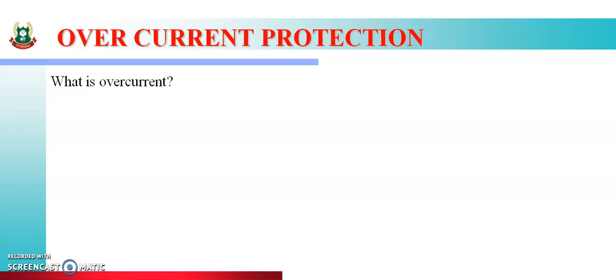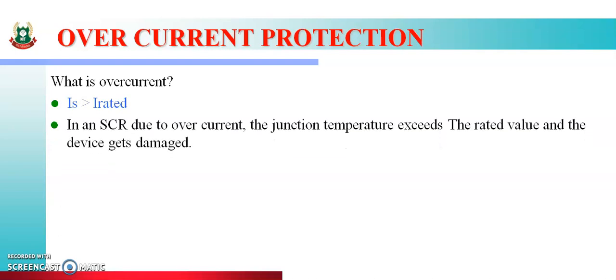The first question arises in our mind: what is meant by overcurrent? Overcurrent means Is is greater than I rated. That means when supply current is greater than the rated value of SCR, that is called overcurrent.